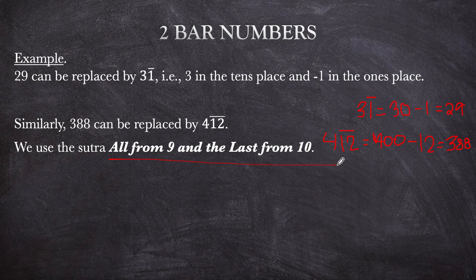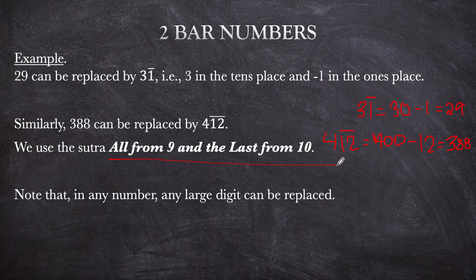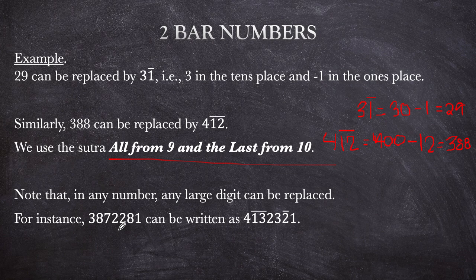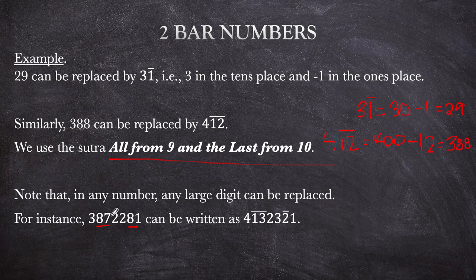Note that in any number, any large digit can be replaced. For example, 3,872,281 — if we replace all numbers greater than 5 into bar digits, we replace the 8 and 7, and also the 8. We add 1 to 3 to get 4, then apply 'all from 9 and the last from 10': since 8 is not the last number but 7 is, it becomes bar 13. The 8 that is last becomes bar 2.